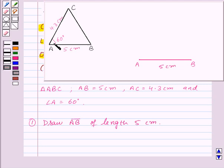Now we are given that angle A is equal to 60 degrees. So at point A let us draw angle XAB equal to 60 degrees. So here angle XAB is equal to 60 degrees. Our second step of construction is at point A draw angle XAB equal to 60 degrees.